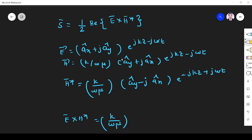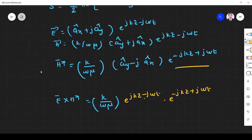Next I multiply E cross H. So this is constant that I write here, e power jkz minus j omega t. This one is e power minus jkz plus j omega t. Everything multiplied.